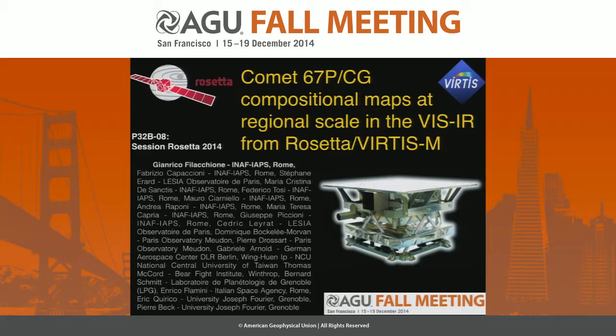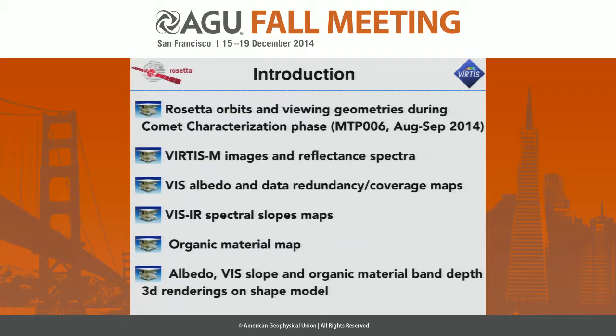This is the second paper about the VIRTIS result. I will focus in particular on the results of VIRTIS-M, the imaging channel, concerning the results of the observation of the nucleus of comet CG. I will start, since we are a remote sensing instrument, with the description of the orbits and the viewing geometries that were occurring during the VIRTIS observation in last August, during the MTP6 observation phase.